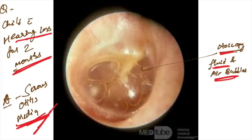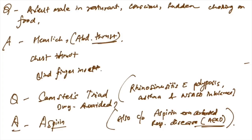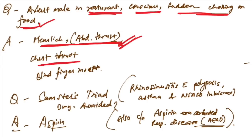Adult male in restaurant, conscious and sudden choking on food. What maneuver is done? Heimlich maneuver is done, that is abdominal thrust. Options were abdominal thrust, chest thrust, and blind finger incision. Chest thrust is not done. Heimlich maneuver is done.